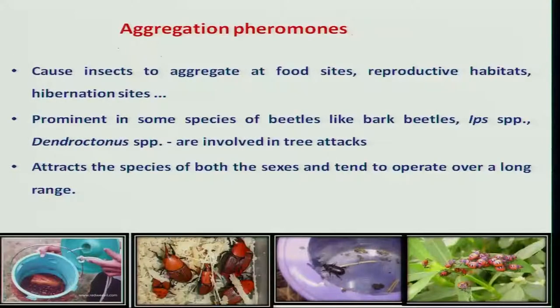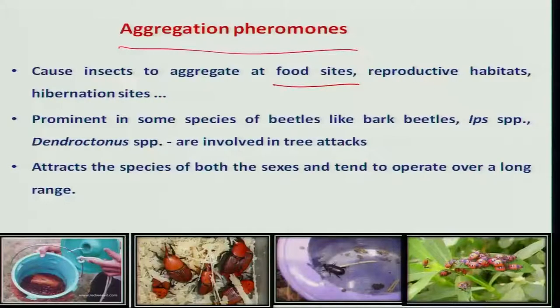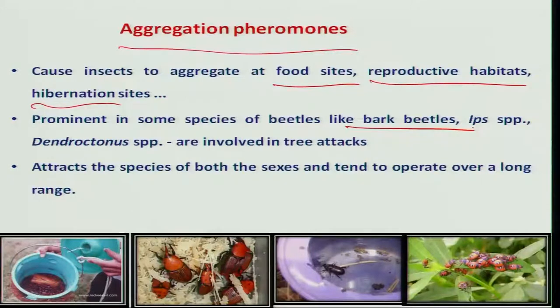In case of pheromones, we have aggregation pheromones. These aggregation pheromones are produced by a group of insects. These insects are going to aggregate for their food sites, for reproductive habitats, or even for hibernation purposes. These aggregation pheromones are much understood in case of bark beetles.